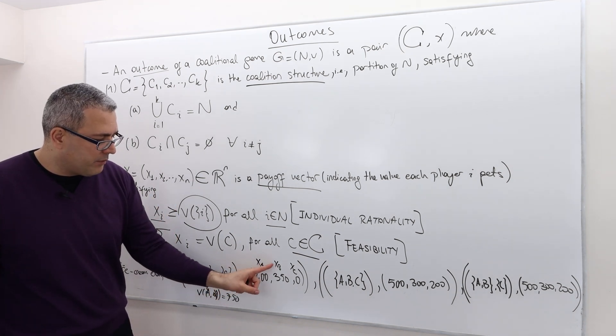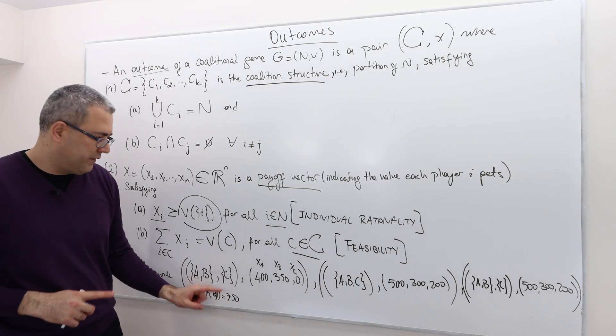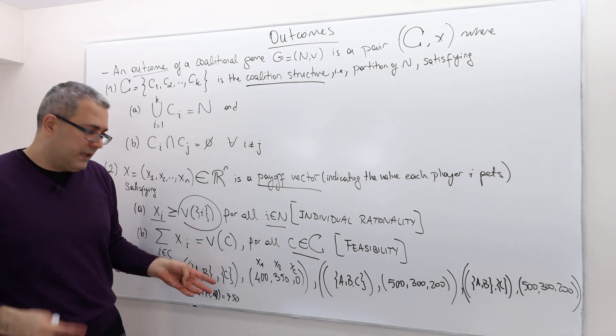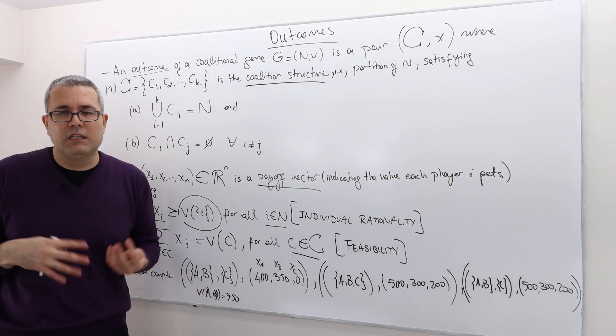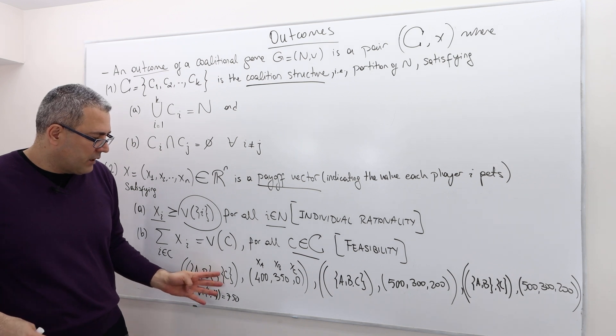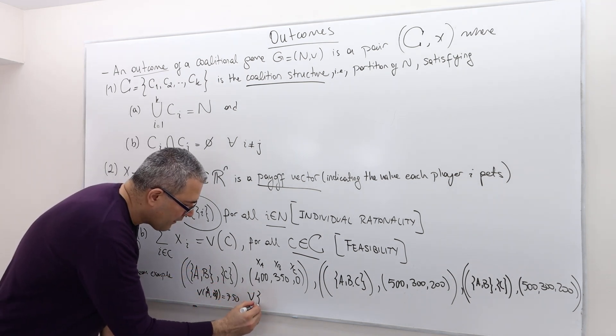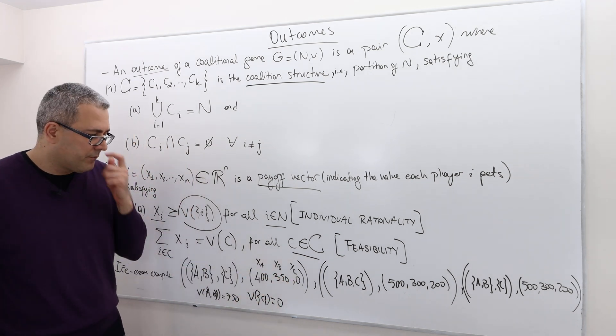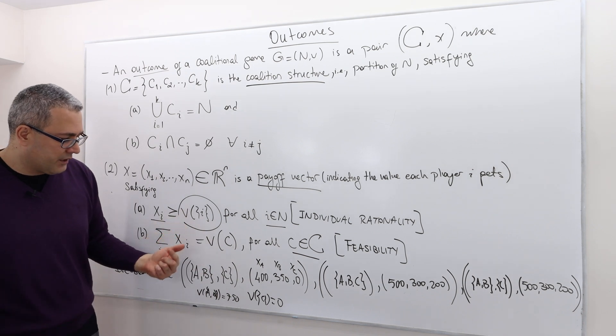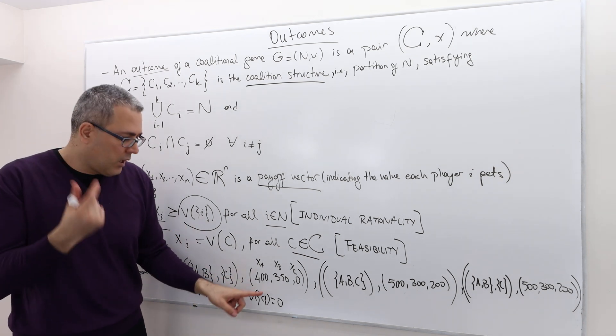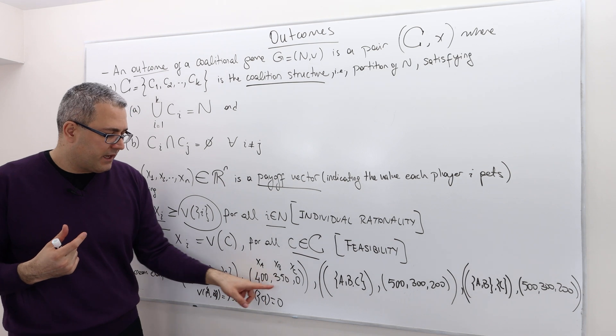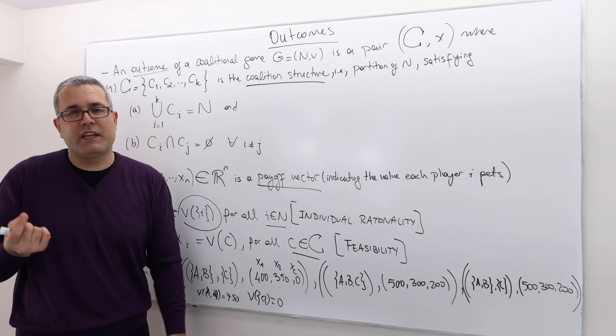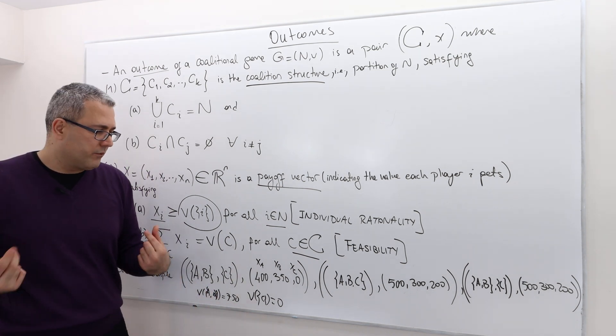But the XA plus XB is exactly equal to 750. And C forms a coalition alone, meaning he doesn't join or AB does not include C. And so remember, in this case, V of C was zero, and this is exactly what he gets. So all of those are individually rational, because being alone was zero. And so everybody's getting, both agent A and B are getting strictly higher payoff. Agent C is getting exactly his payoff of being alone.